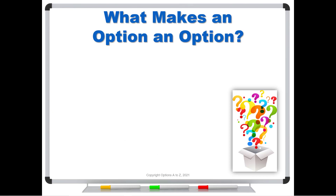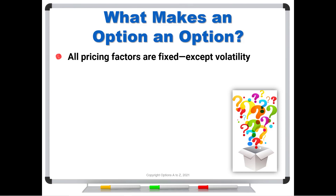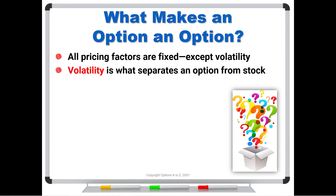We have to go back to one of the most basic concepts: what makes an option an option? When we look at a pricing model, all pricing factors are fixed except volatility. All of the others are known by the market — there's no room for arguing about them except for volatility. So volatility is what separates an option from stock. That's our first clue.